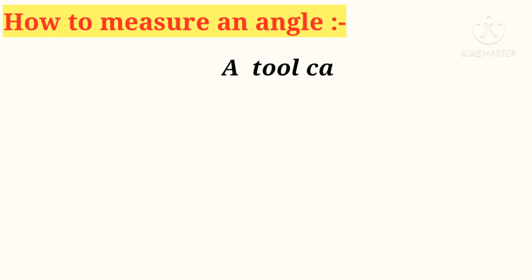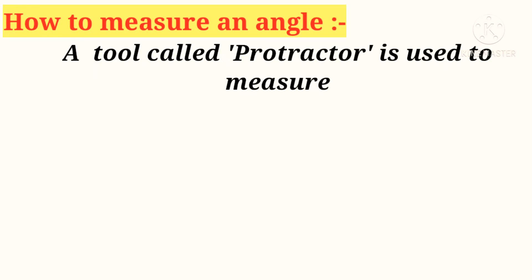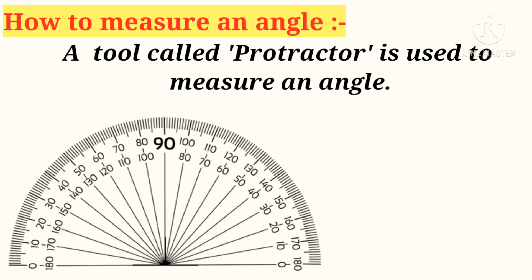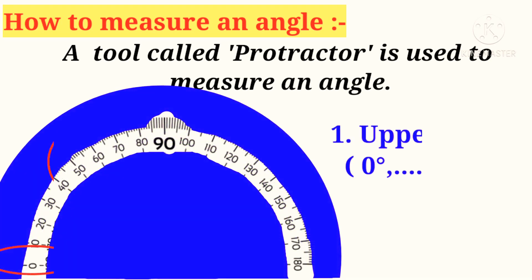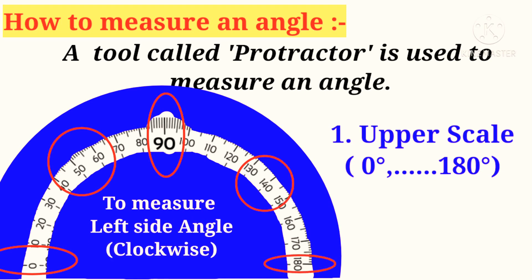A tool called protractor in the compass box is used to measure an angle. Observe that there are two scales. The upper scale starts from 0 degrees to 180 degrees from left side to right side, and it is used to measure the left angle in clockwise direction.